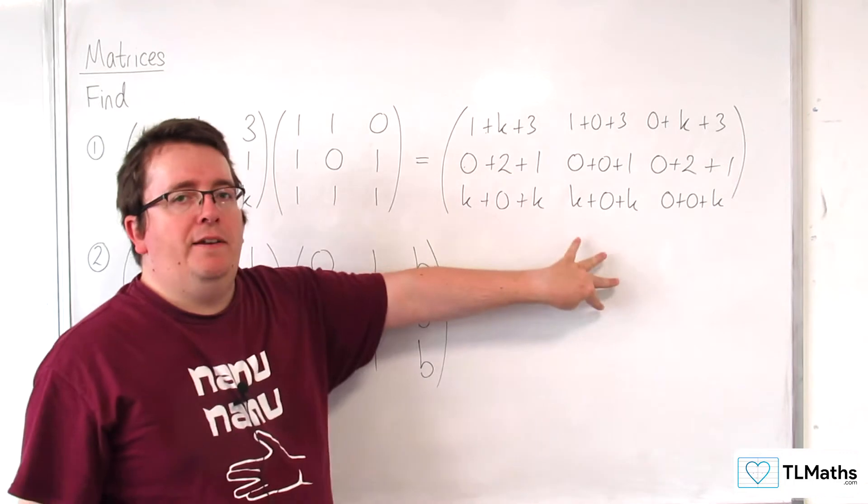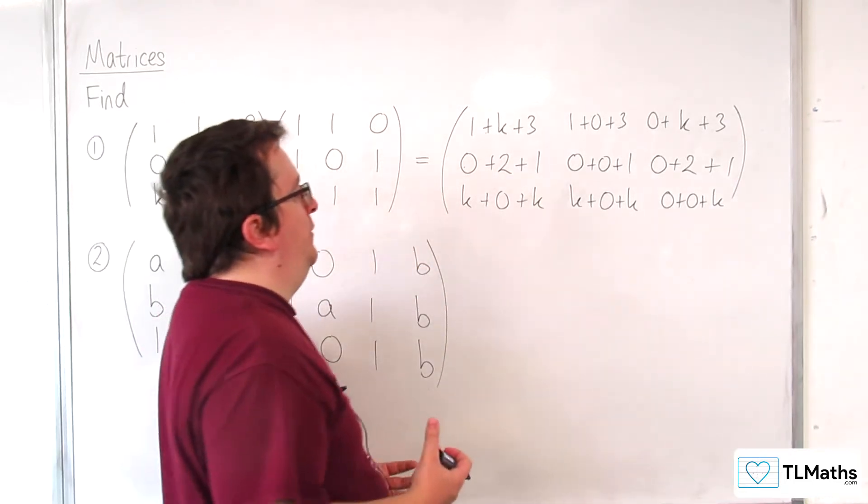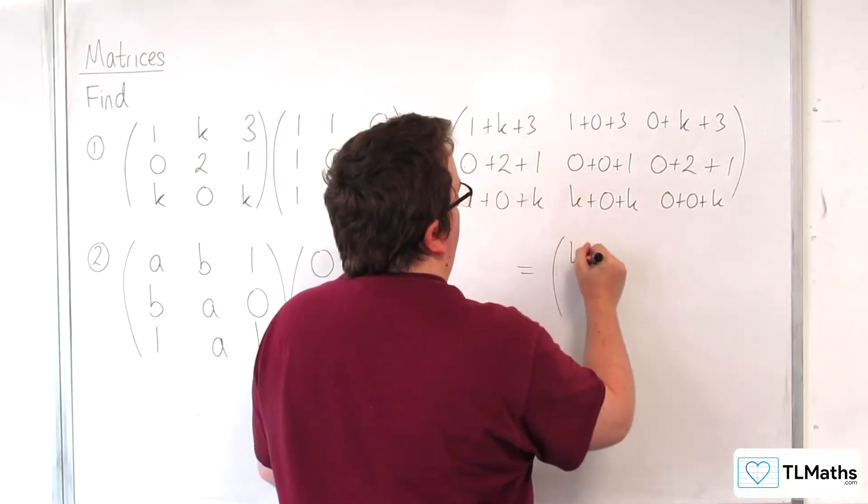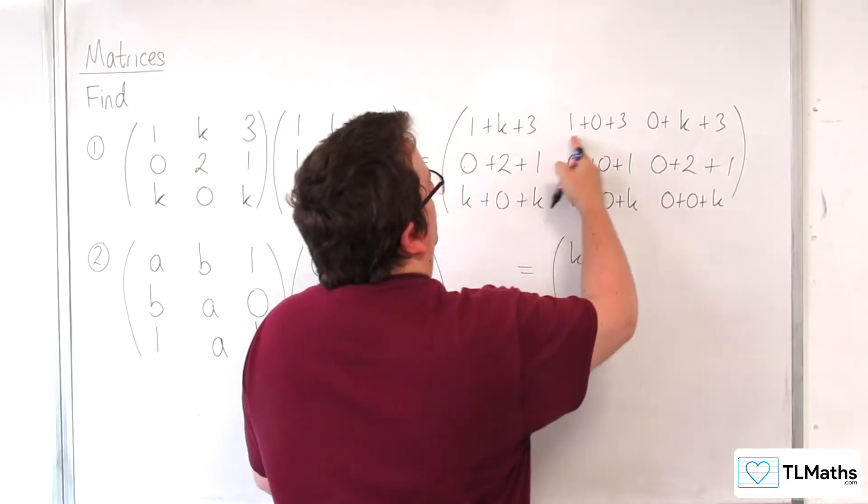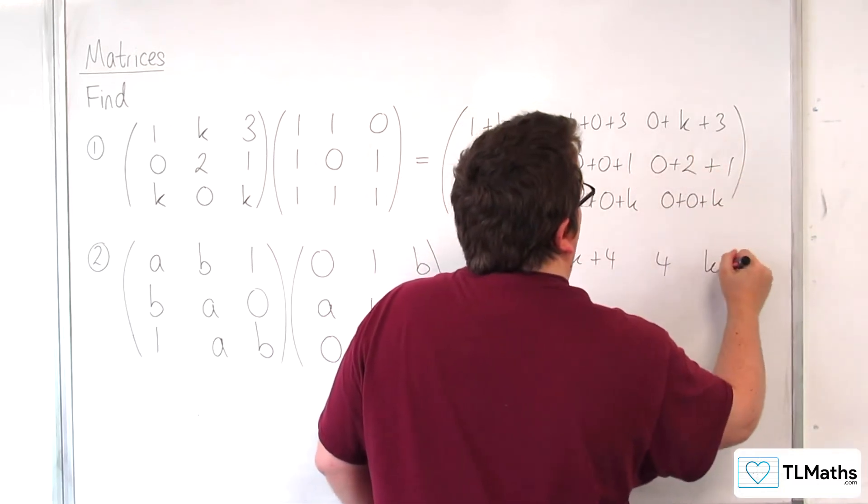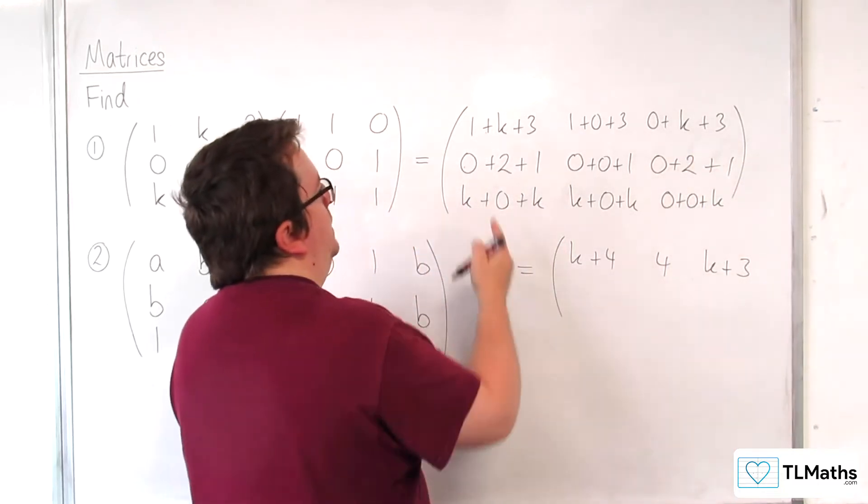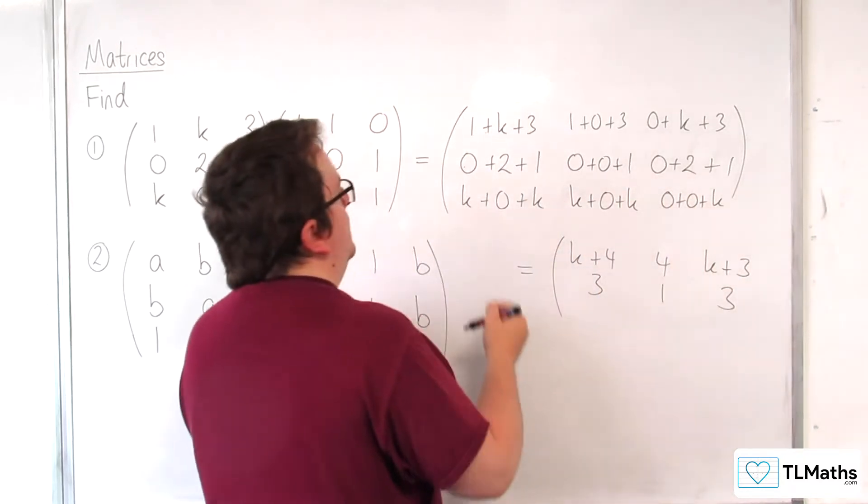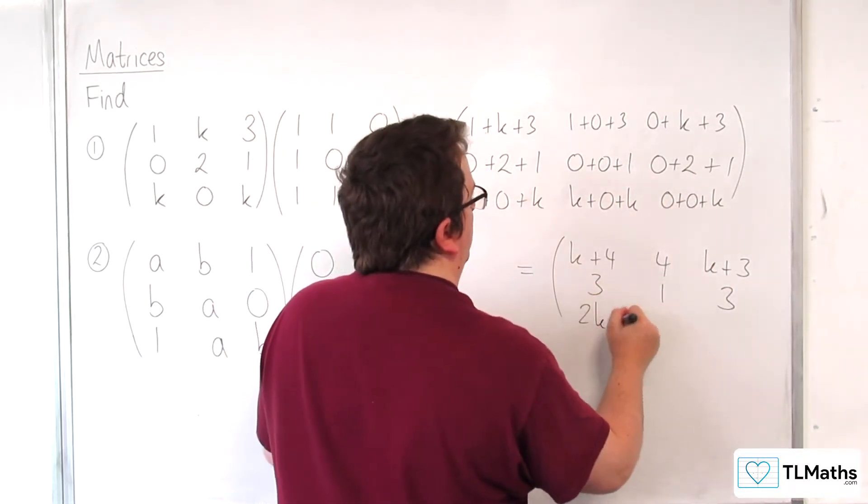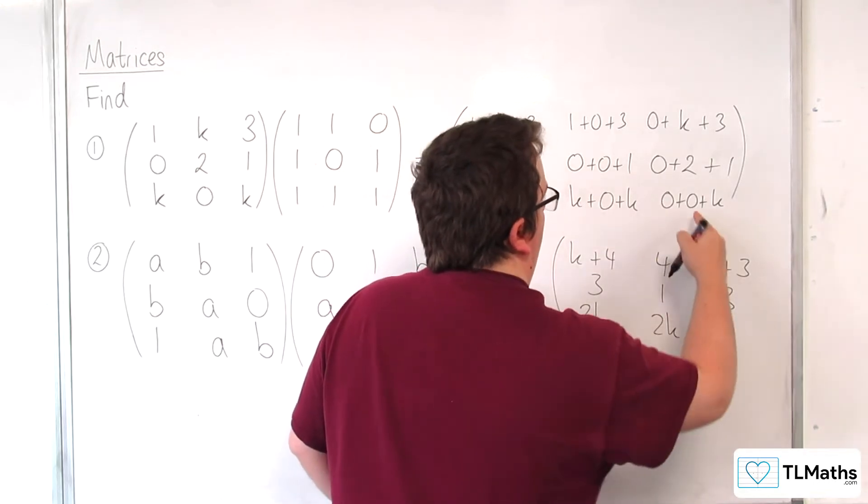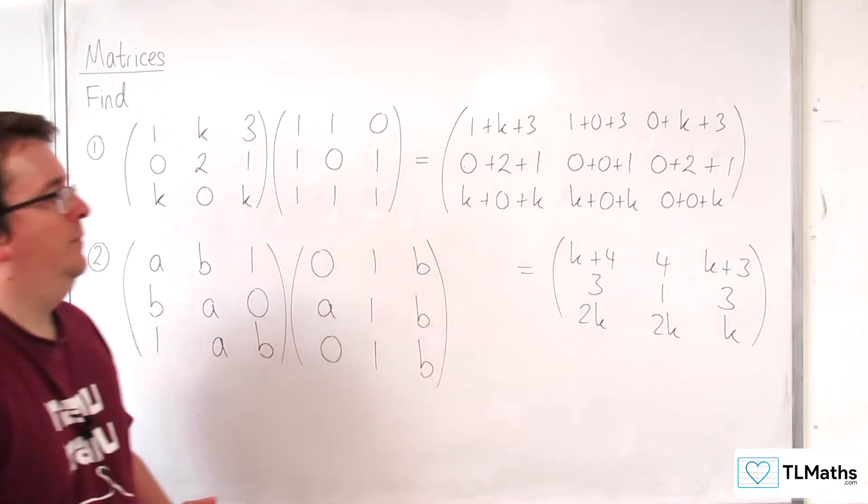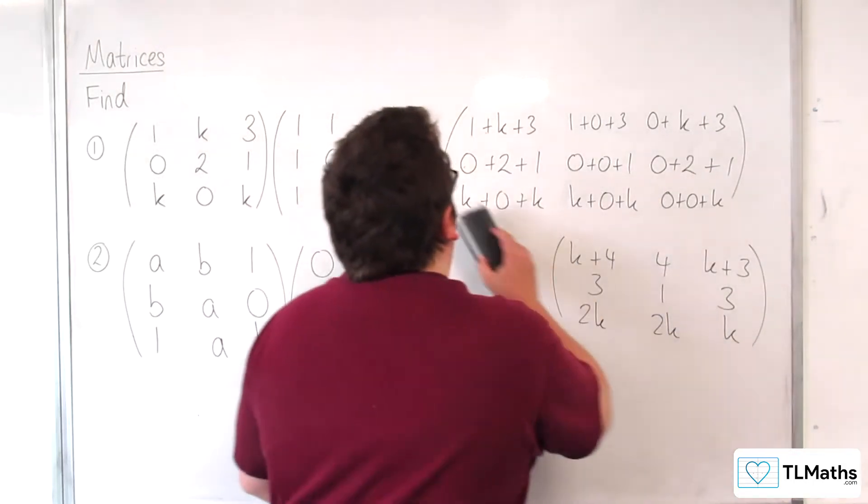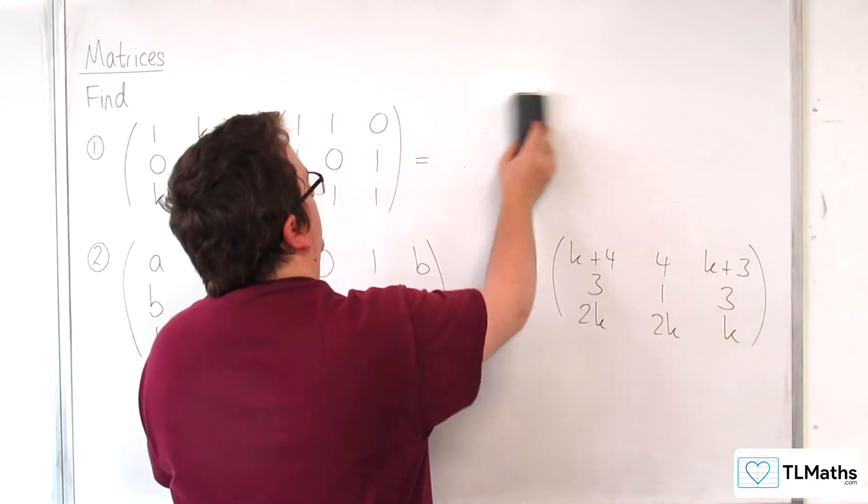So if you write it out longhand like this, then it makes the process easier for you, because now you can simplify it. So we've got k plus 4, we've got k plus 3, then we've got 3, 1, 3, then we've got 2k, 2k, and k. So now that is the answer I'm looking for.